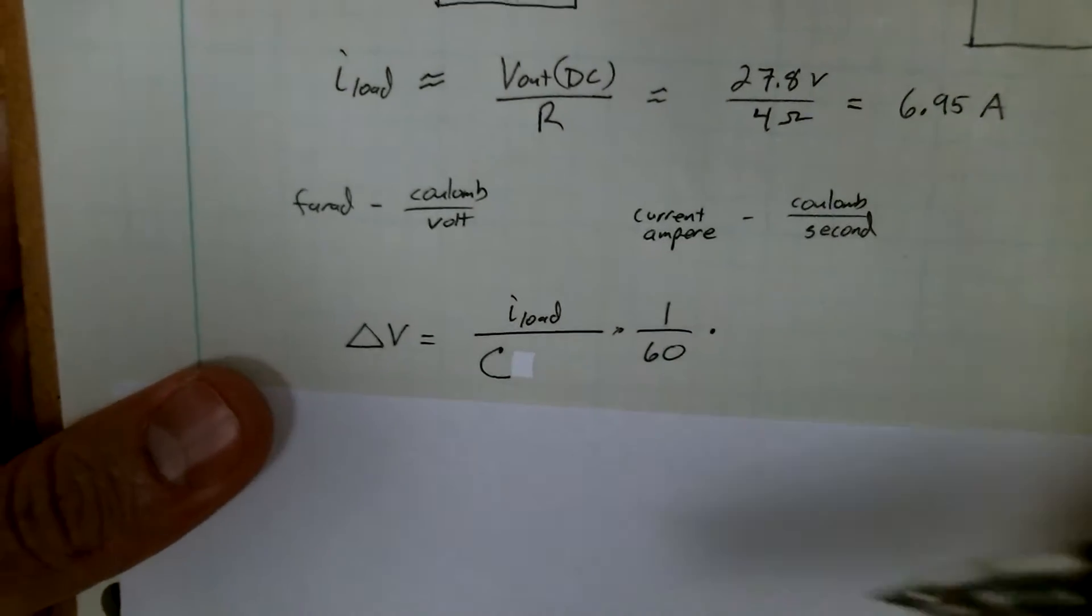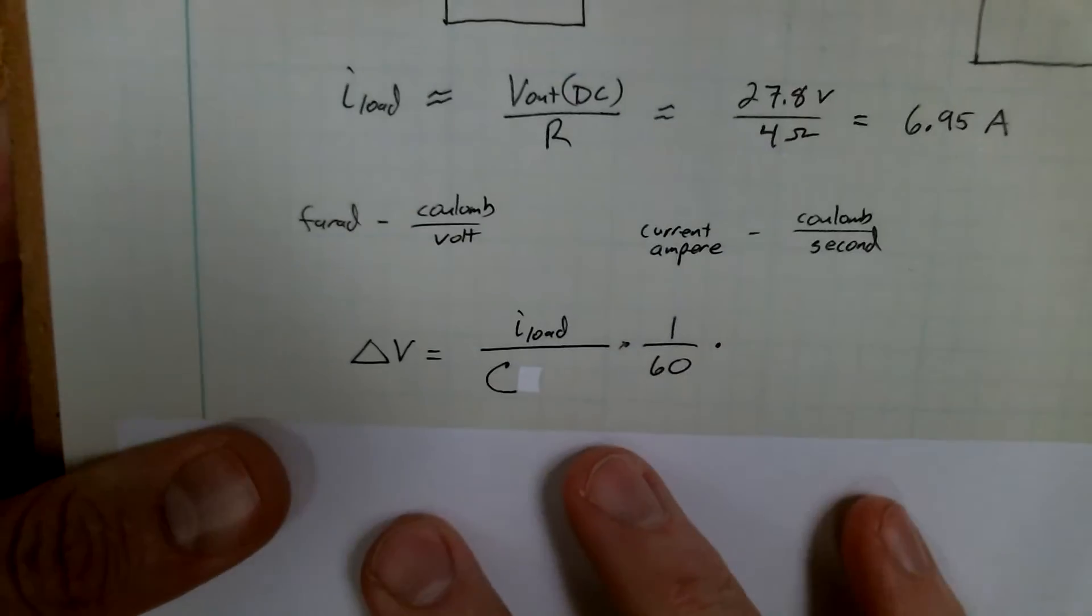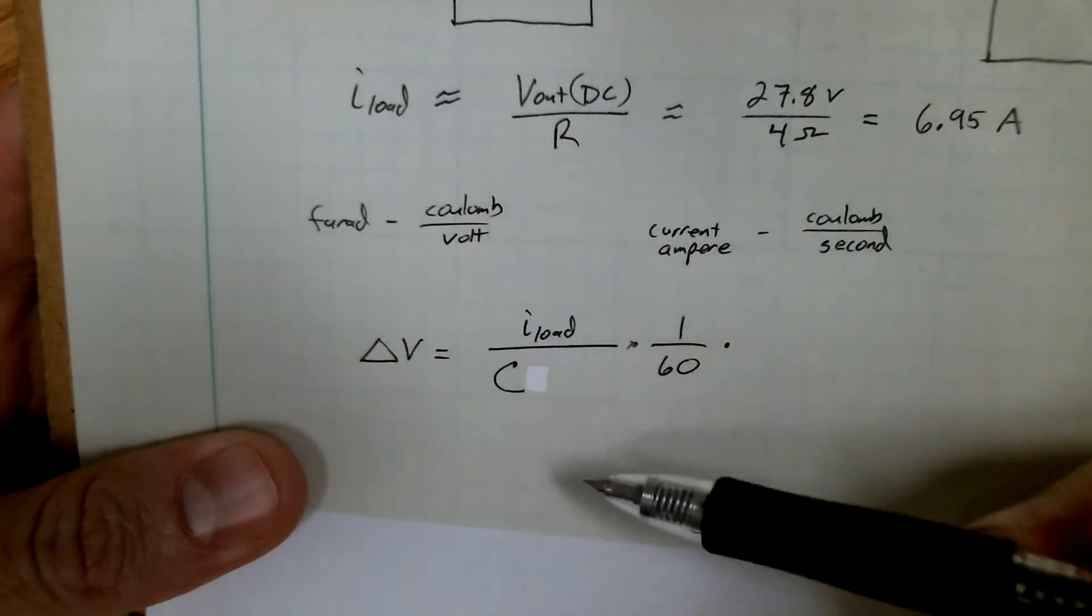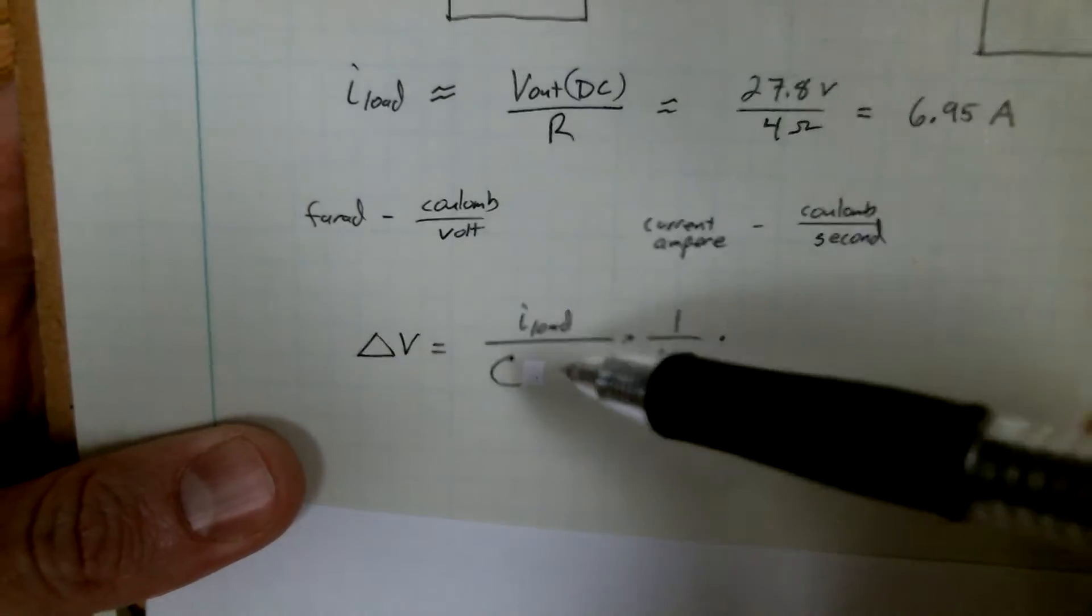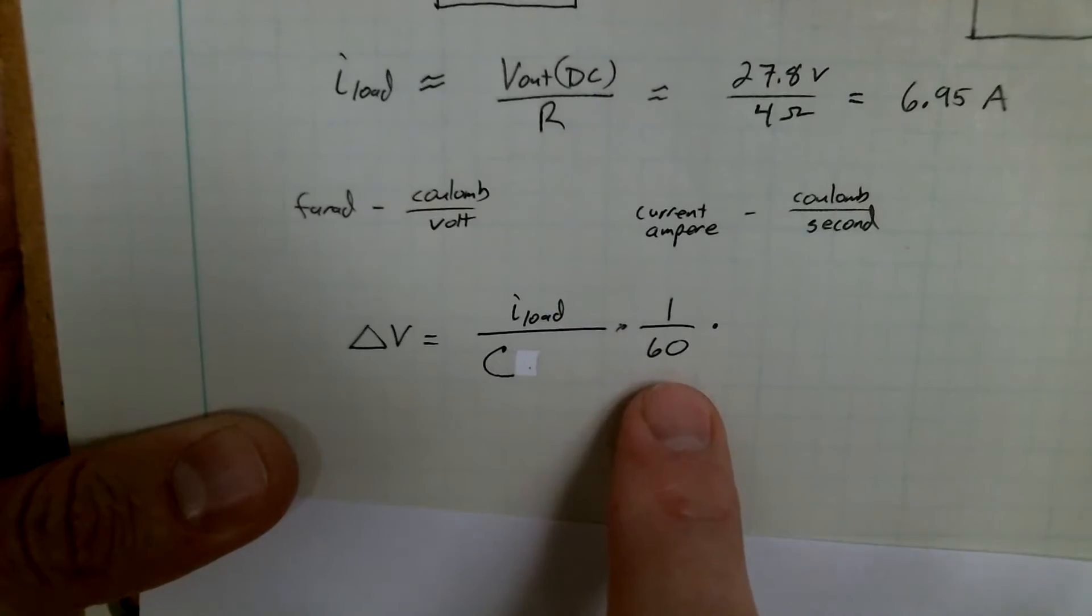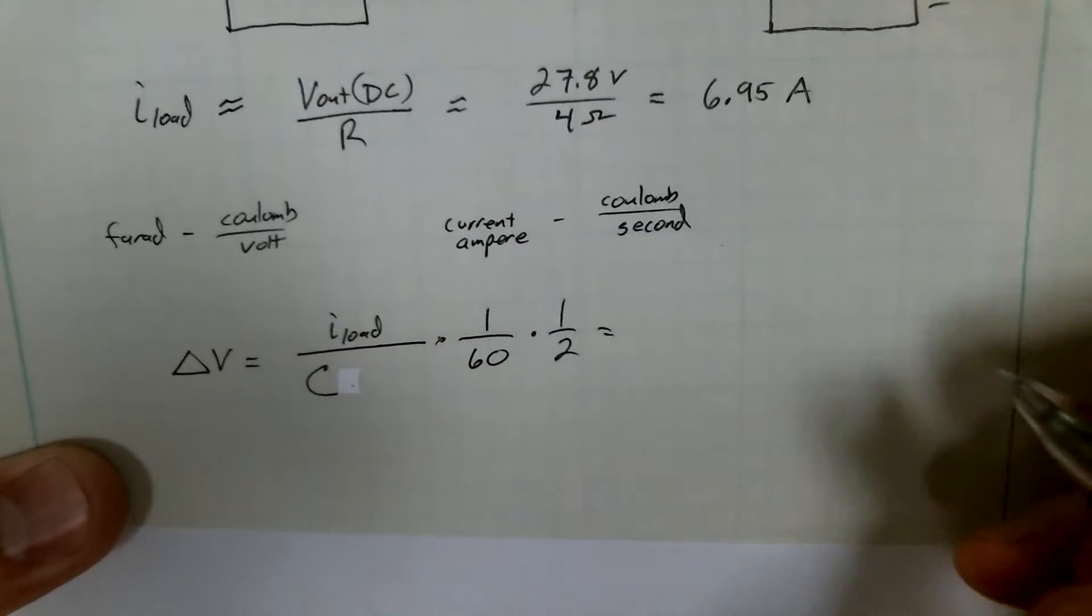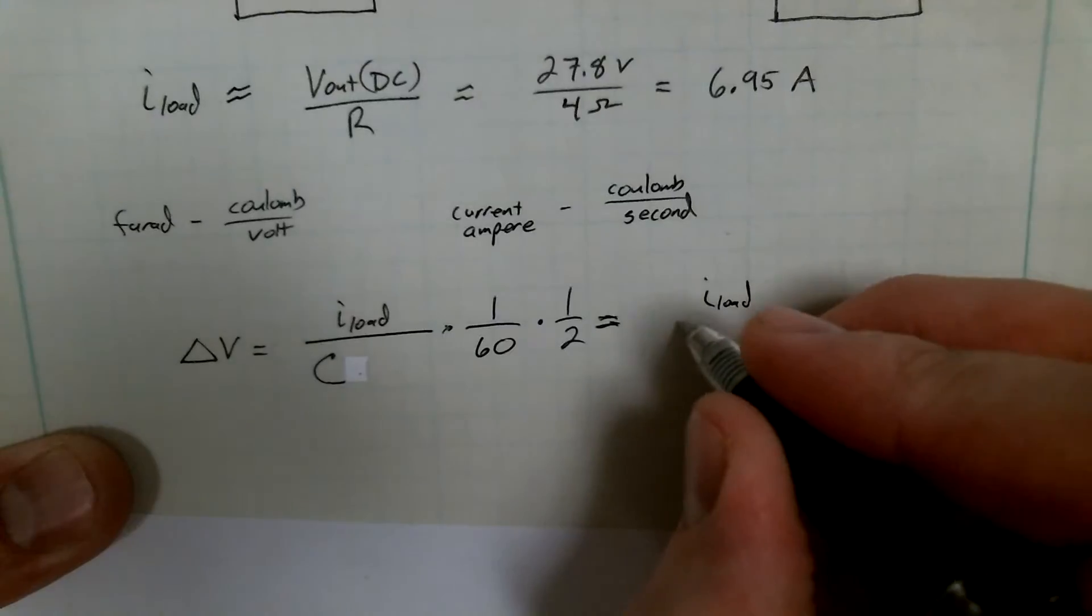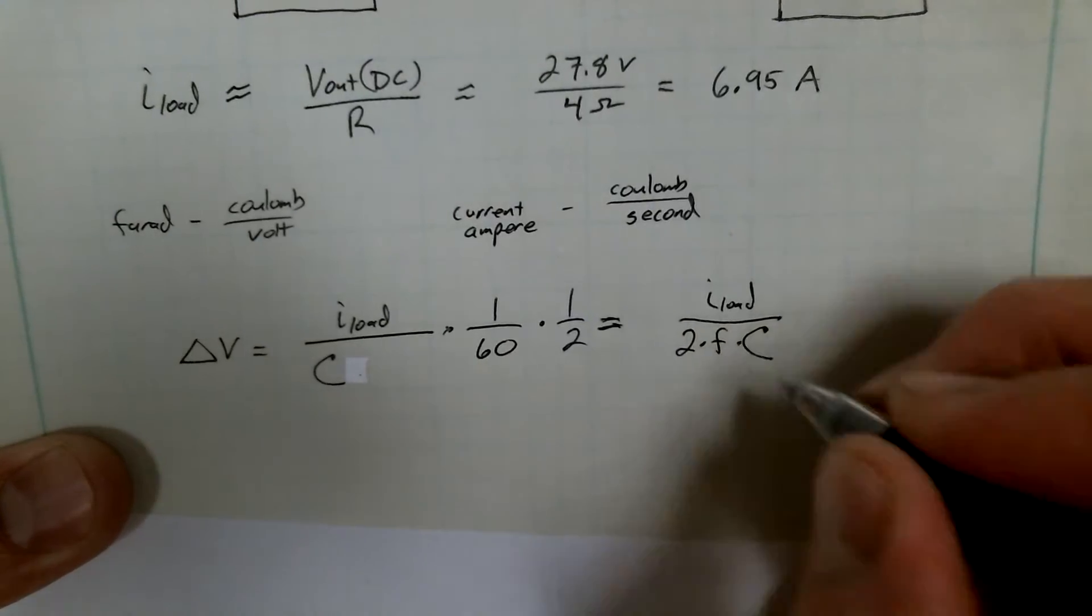If we do that and combine them together, we get delta V. If we take our load current over our capacitance, we get coulombs per volt, or we end up with volts per second with these two units combined. And this is our period - well, this is the period of our entire thing, we need half of that period. So the equation that you might remember is I_load over 2 times f times C.